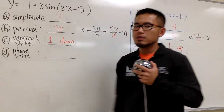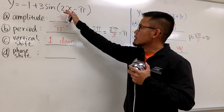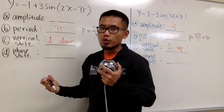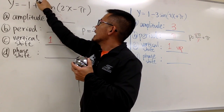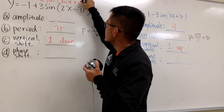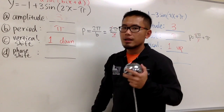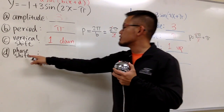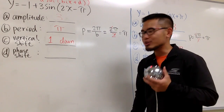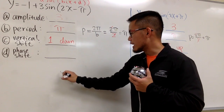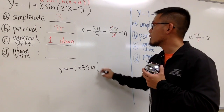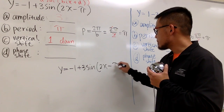Finally, phase shift. The phase shift is something we have to work out from inside the parentheses. Here's the general form: C plus A times sine of B times (X plus D). In order to figure out the phase shift, you have to factor things out from the inside. So let me copy that equation down: y equals negative 1 plus 3 times sine of (2X minus π).